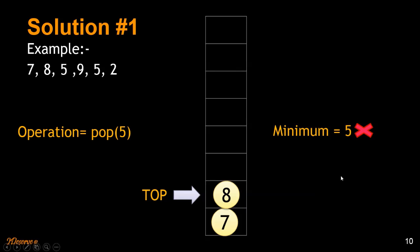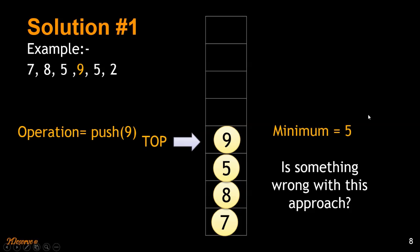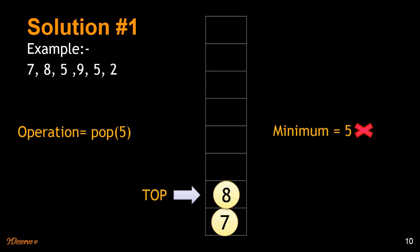That is wrong because we have to keep track of minimums at each level of the stack. At the bottom level, 7 is the minimum. At the upper level, 5 was the minimum. If we had maintained both 5 and 7, we would have been able to give the correct answer. So this approach is wrong.